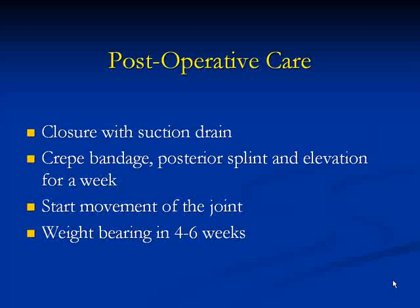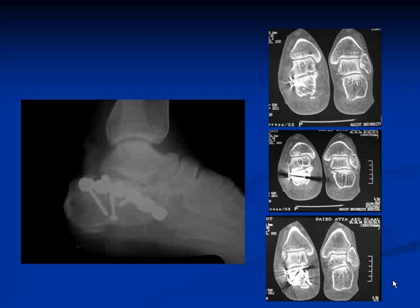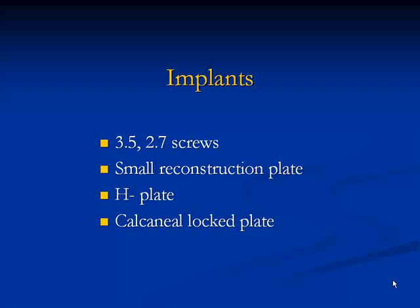Another case showing comminuted fractures treated with a reconstruction plate; this patient required two plates. Various implants can be used: 3.5 or 2.7 mm screws and small reconstruction plates. More recently, a dedicated calcaneal locking plate has been introduced, which offers an advantage in comminuted fractures due to its locked-screw design.